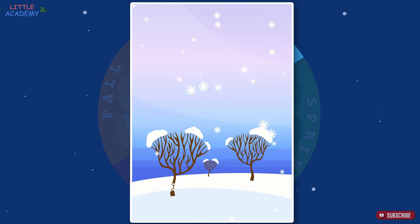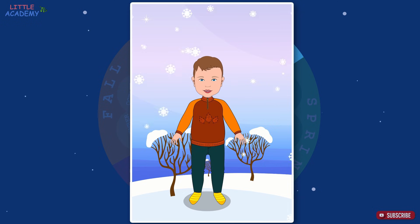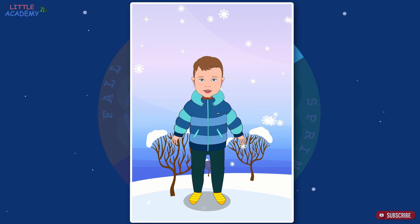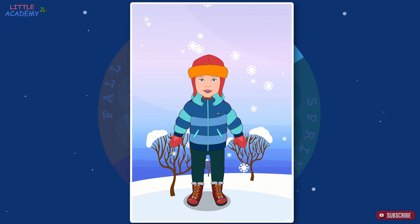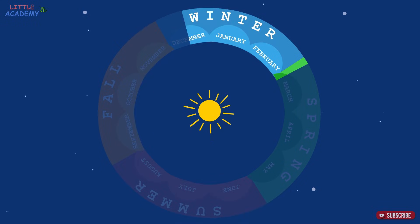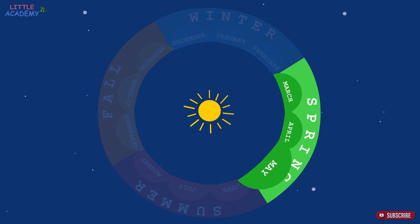The trees have no leaves and the ground is covered with snow. In the winter we dress really warm — we put on a winter jacket, warm boots, a winter hat, and mittens. After winter comes spring. The spring months are March, April, and May.